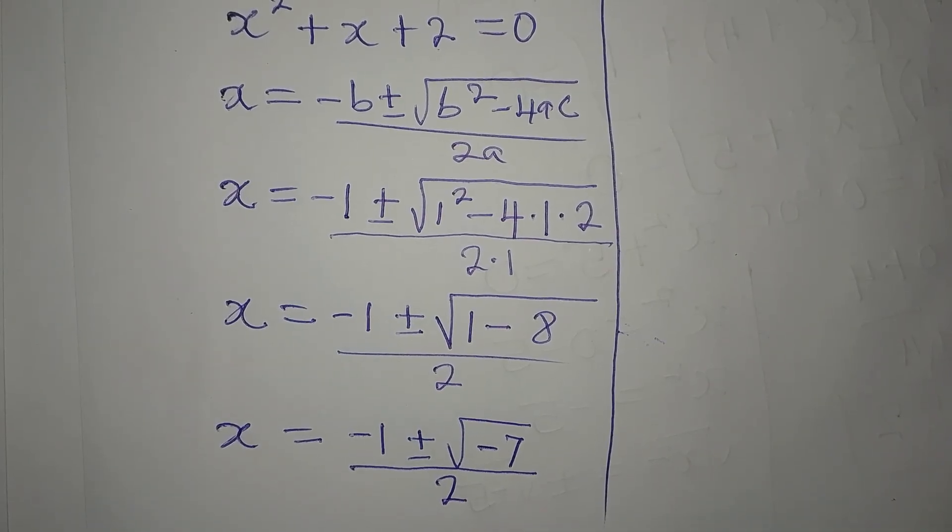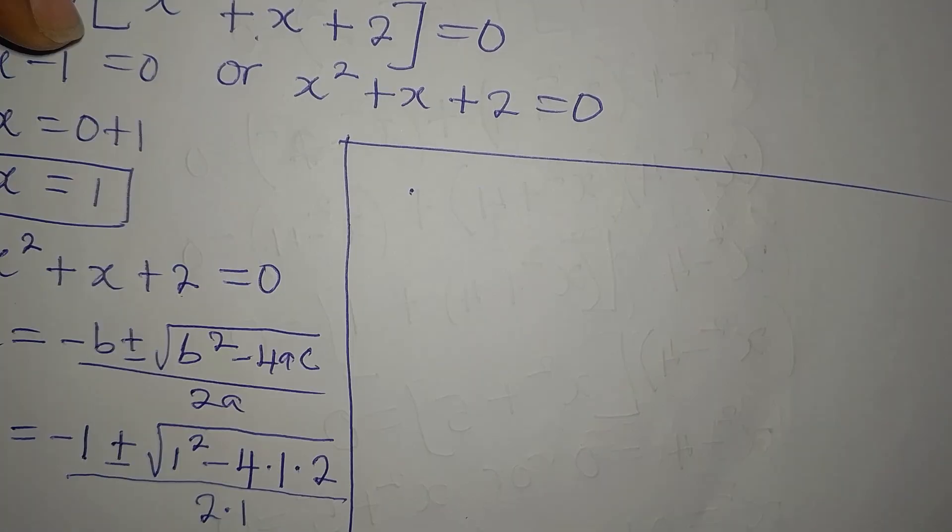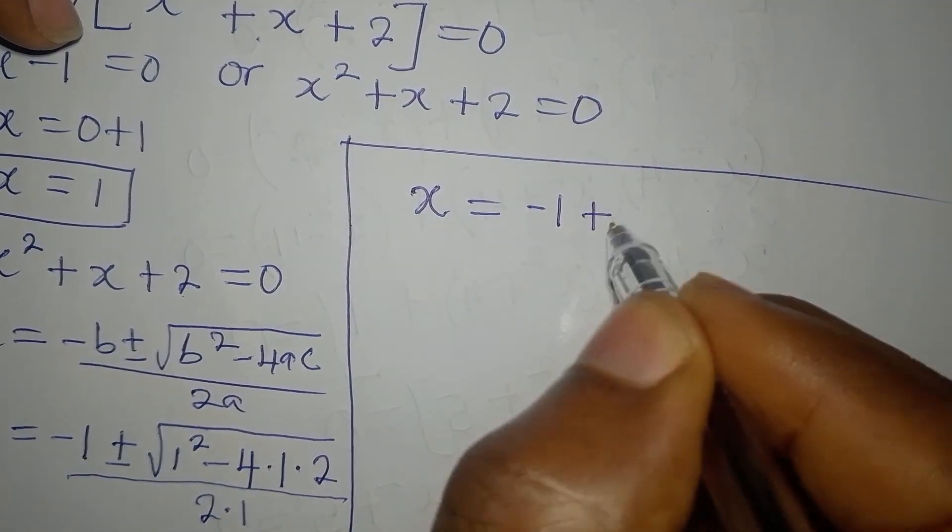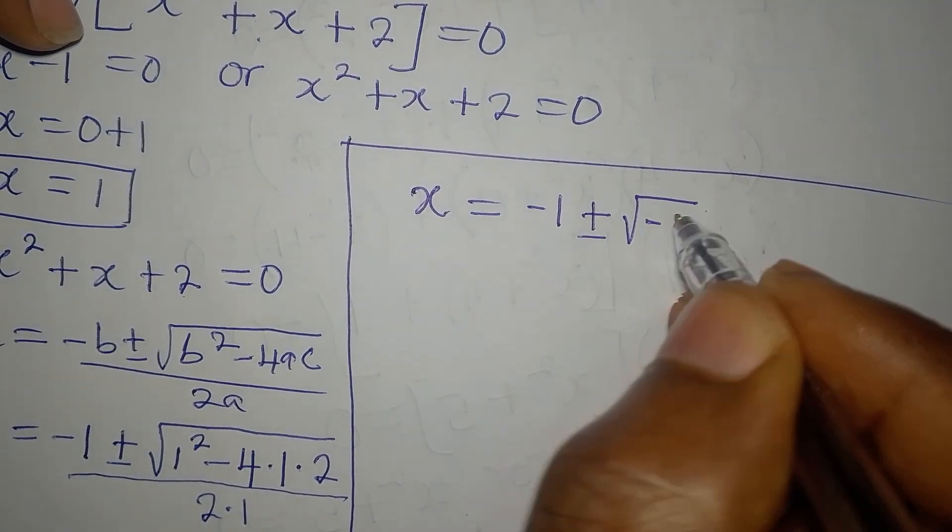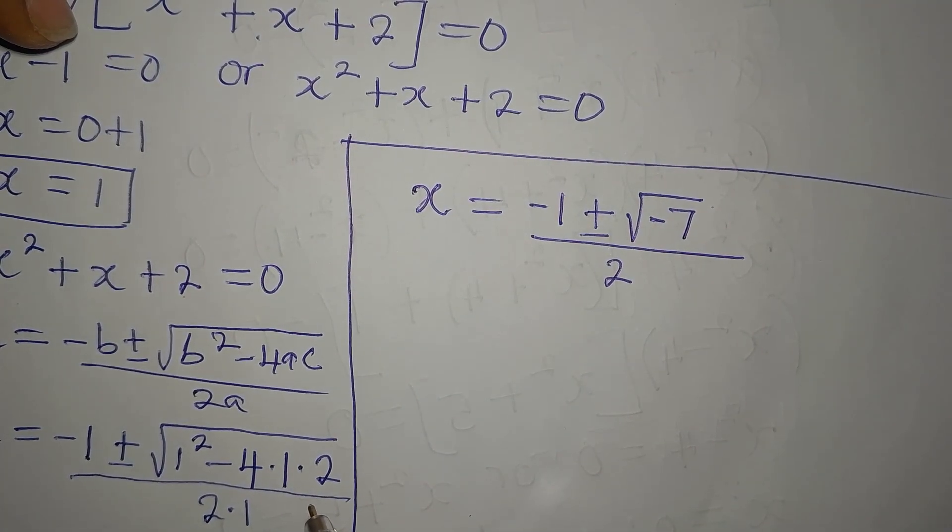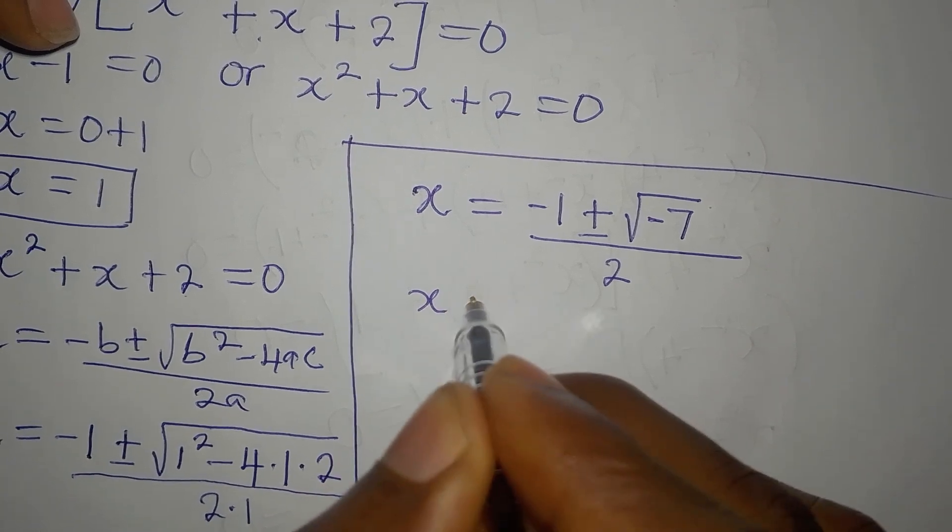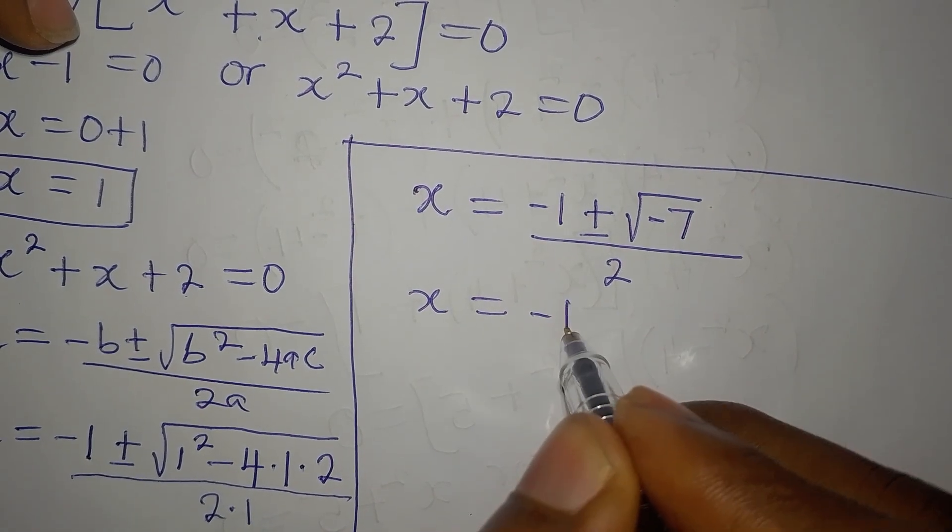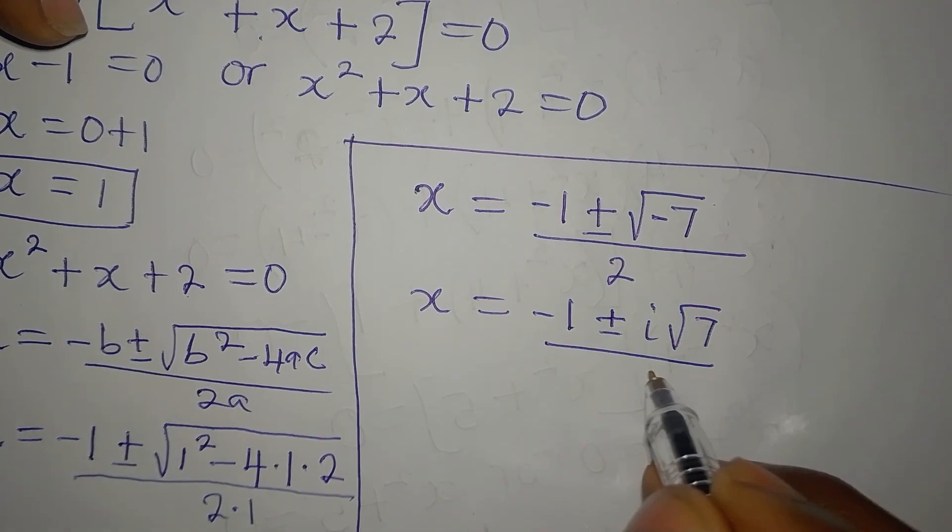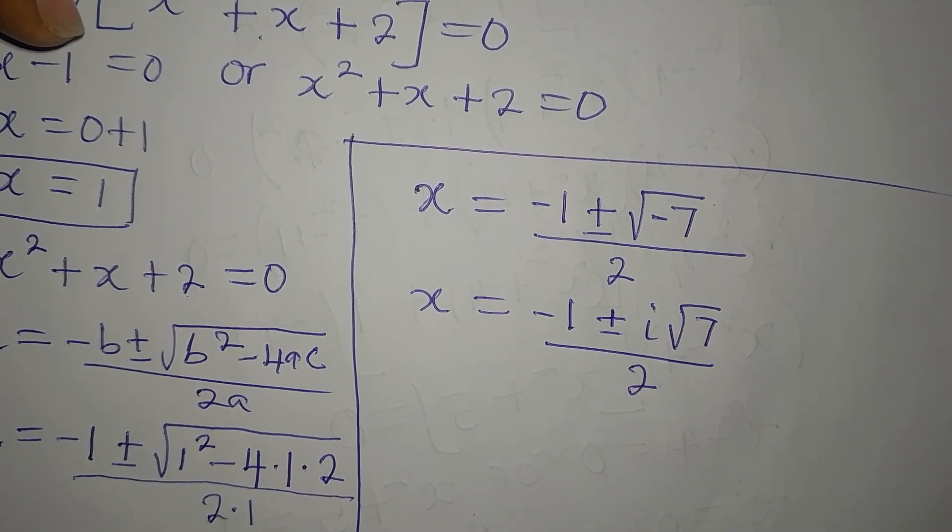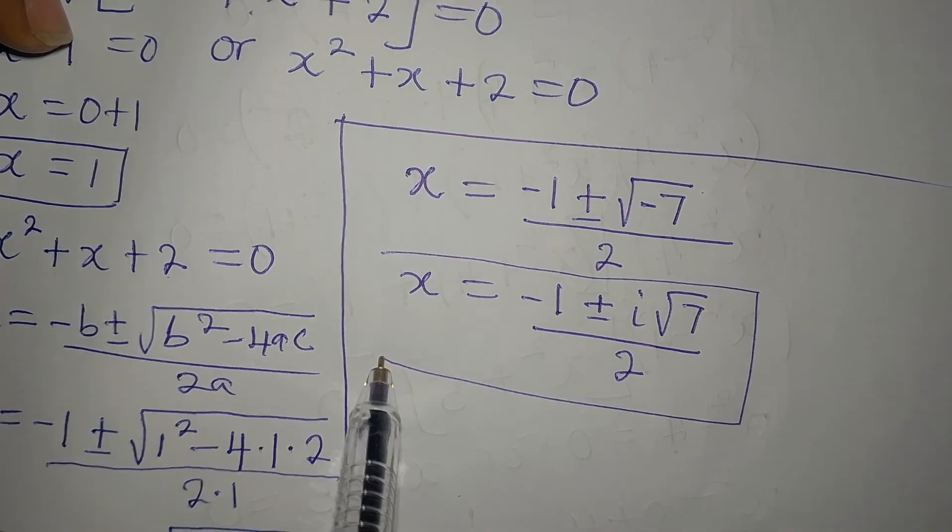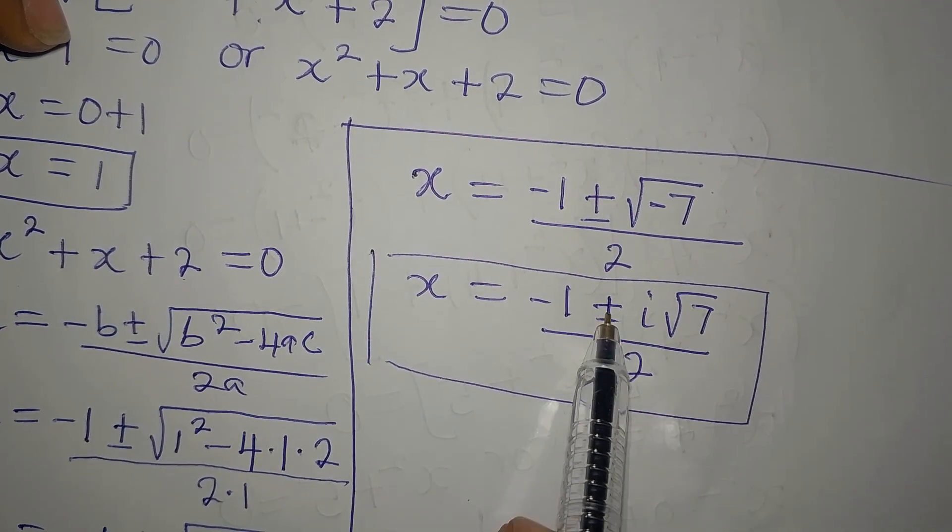Let us continue. So we have our x to be minus 1 plus or minus square root of negative 7 over 2. And then from here, this means that our x is equal to minus 1 plus or minus i root 7 over 2, because of the negative. And then you should know that this is a 2 in 1 solution because of the plus or minus.